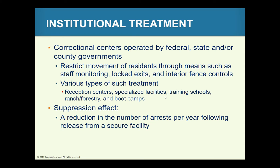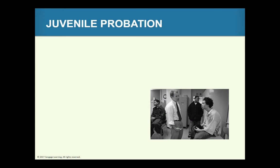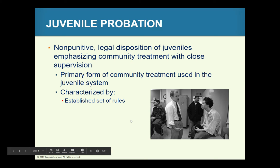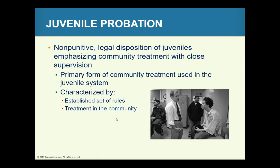Some experts believe that any hope for rehabilitating juvenile offenders and resolving the problems of crime lies in community treatment centers. Juvenile probation refers to non-punitive legal dispositions for youth, emphasizing treatment without incarceration. The primary form of community treatment used by the juvenile justice system is probation, characterized by the establishment of rules. When applied correctly, probation maximizes the liberty of the individual while vindicating the authority of the law and protecting the public.